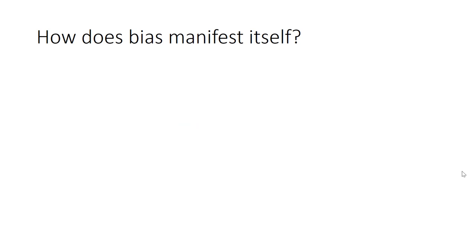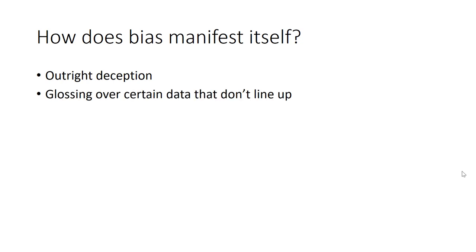Another limitation of science is that it involves both data collection and data interpretation — and in data interpretation, there will be bias. Sometimes, though rarely, it's outright deception, like a paleontologist claiming to find fossils throughout the Himalayan range in places he'd never been, to build a name for himself. This is rare but does happen.